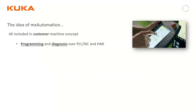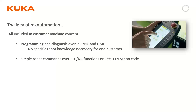The whole idea with MX Automation is that it allows you to do programming, diagnostics — pretty much everything you do on the Kuka pendant or in the Kuka system — but remotely from a PLC or NC interface and also from your HMI system. The end user really doesn't need to know anything specific about the robot. Simple robot commands go over the PLC/NC interface as a function library, or if you're using a high-level language like C#, C++, or Python, you can use those as well. Path planning still remains inside the robot control, but all commands come over the MX Automation interface.